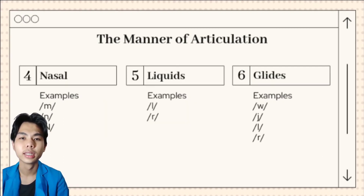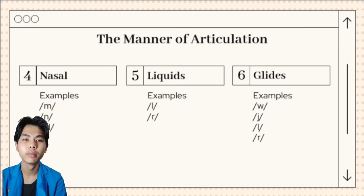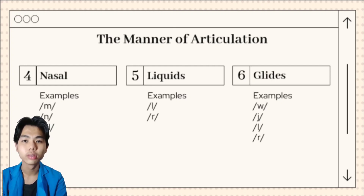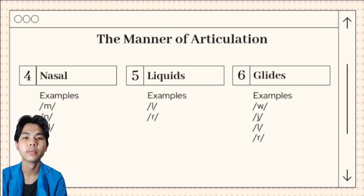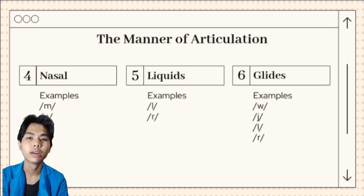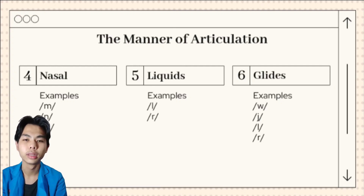And the third is nasal. The air goes out through the nasal cavity, or through the nose. Most sounds are produced orally with the velum raised, preventing airflow from entering the nasal cavity. However, when the velum is lowered and the air stream is allowed to flow out through the nose, nasal sounds are produced. The examples are M, N, and NG. These sounds are described as nasal, and words like 'morning,' 'knitting,' and 'name' begin and end with nasals.